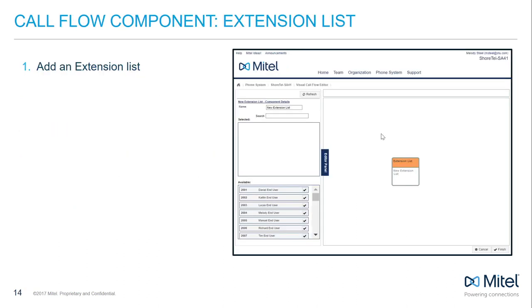An extension list is simply a collection of extensions used to define who can do things like paging or call pickup. They can be used for dial-by-name in the auto-attendant, and they do not require a system programming extension. Click Add on the Visual Callflow Editor main screen to choose the extension list from the drop-down.